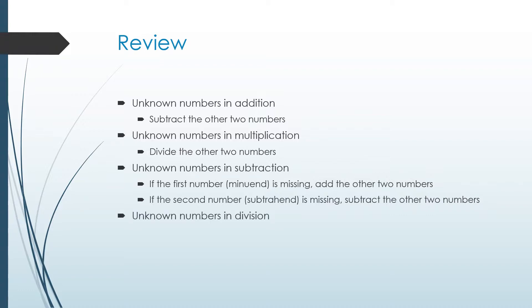And lastly, unknown numbers in division. If you're missing the first number, which is the dividend, you're going to multiply those other two numbers. And if you're missing the second number, the divisor, you're going to divide the other two numbers to solve.